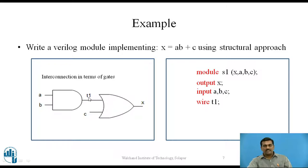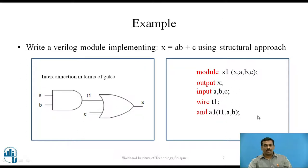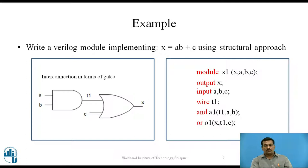Then we describe the circuit in terms of logic gates. The first statement written is and a1, and inside the bracket we provide the port list: T1 is the output written first, then inputs a and b. The next statement is or o1 with ports x, T1, c — here x is the output of the OR gate, T1 is the first input, and c is the second input. We have defined this circuit in terms of logic gates and close the module definition with the endmodule keyword.